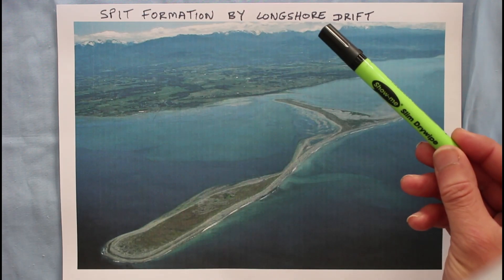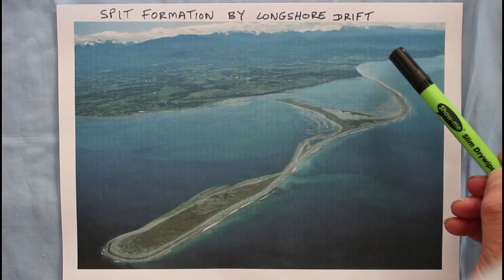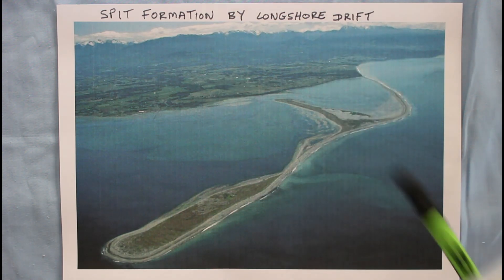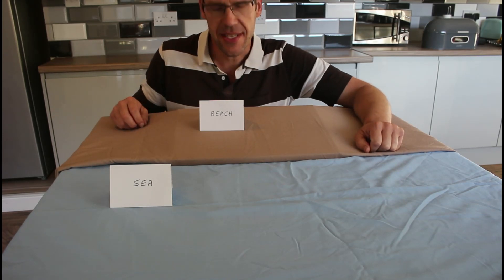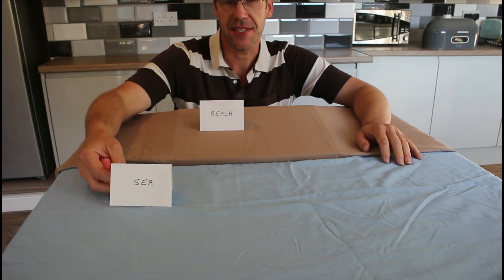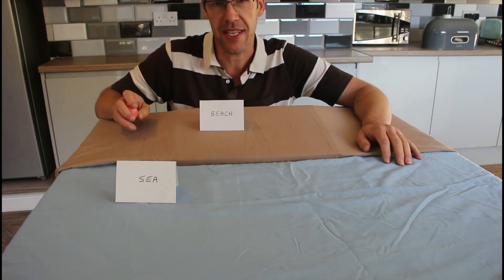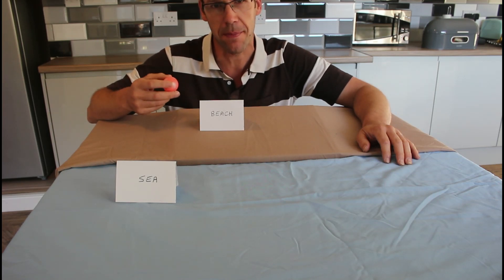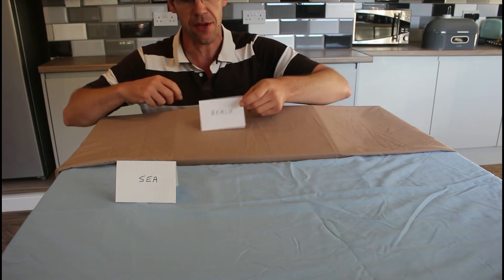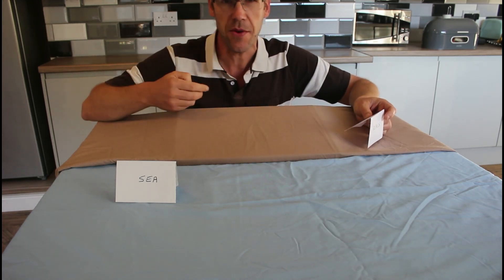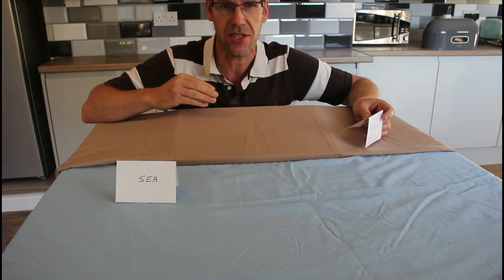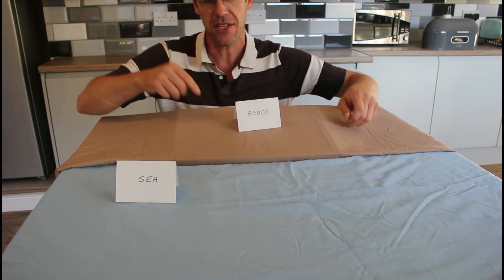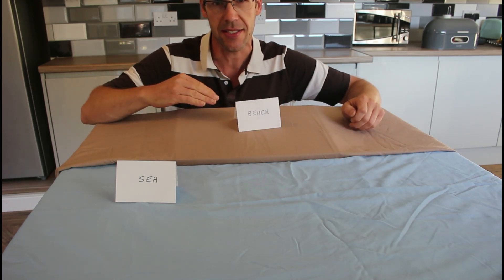Spits are formed by longshore drift. Longshore drift is the movement of material along the coast and then the dropping of this material into the sea. In this demonstration, the blue cloth is the sea or ocean, the brown cloth is the sand or beach, and this ping pong ball represents sand or pebbles on the beach. Every single beach slopes down into the sea — we know this because waves bring water onto the beach and the water drains back out into the sea.